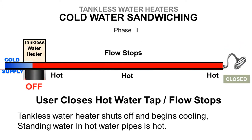Phase 2: The user closes the hot water tap and flow stops. The tankless water heater shuts off and begins cooling. Standing water in the hot water pipes remains hot.